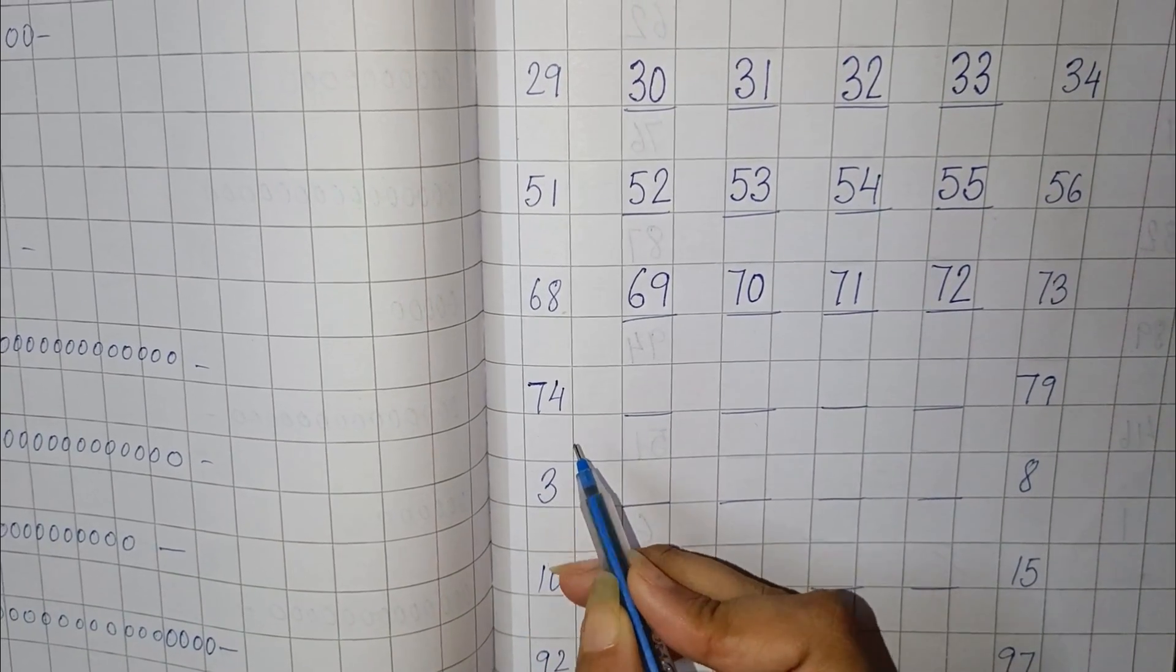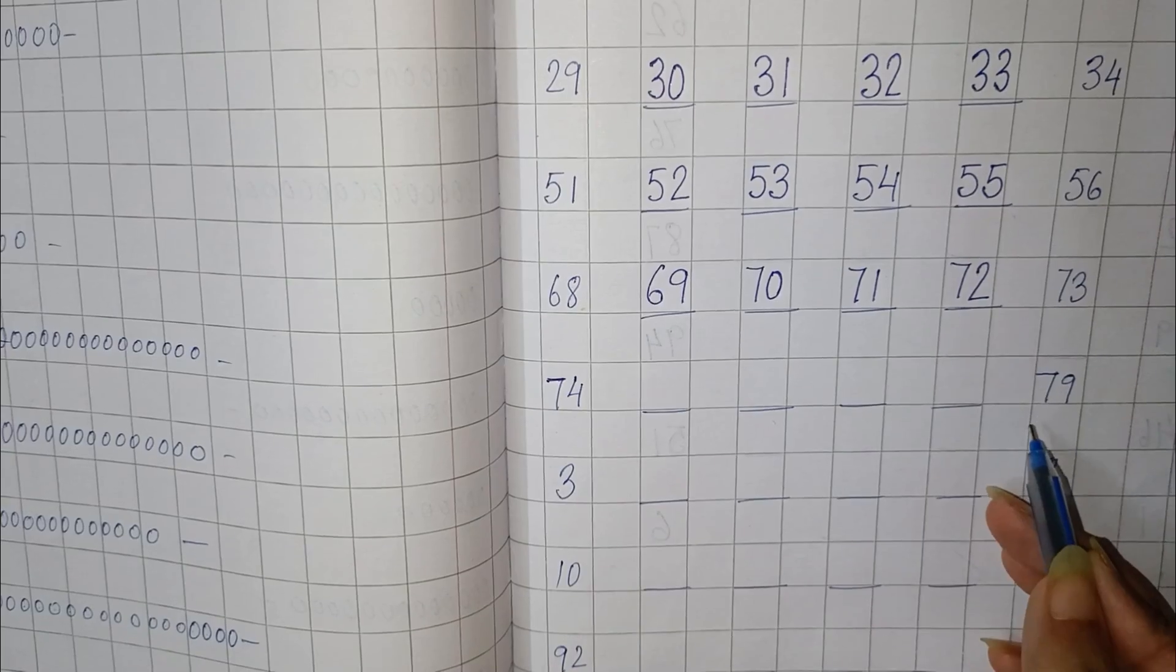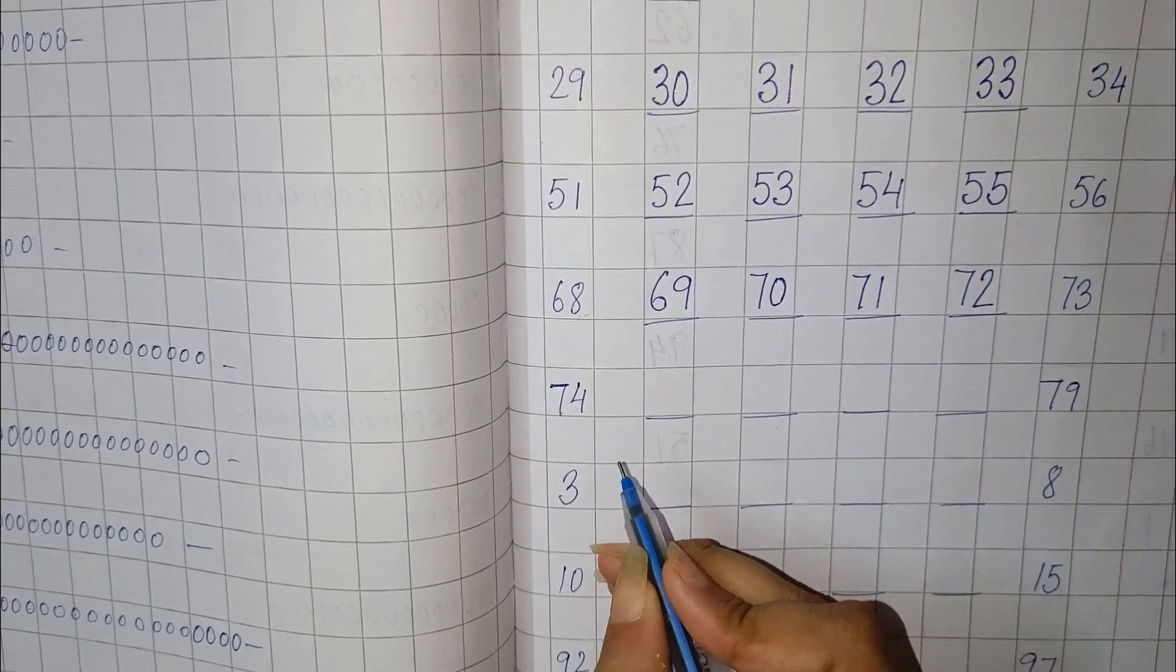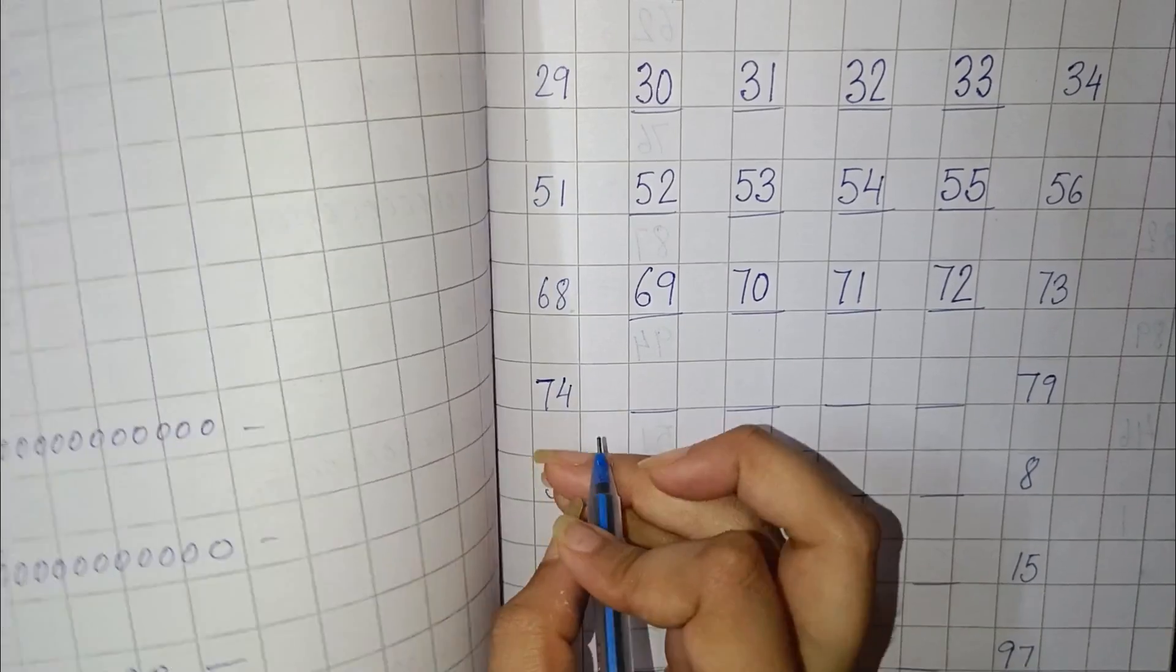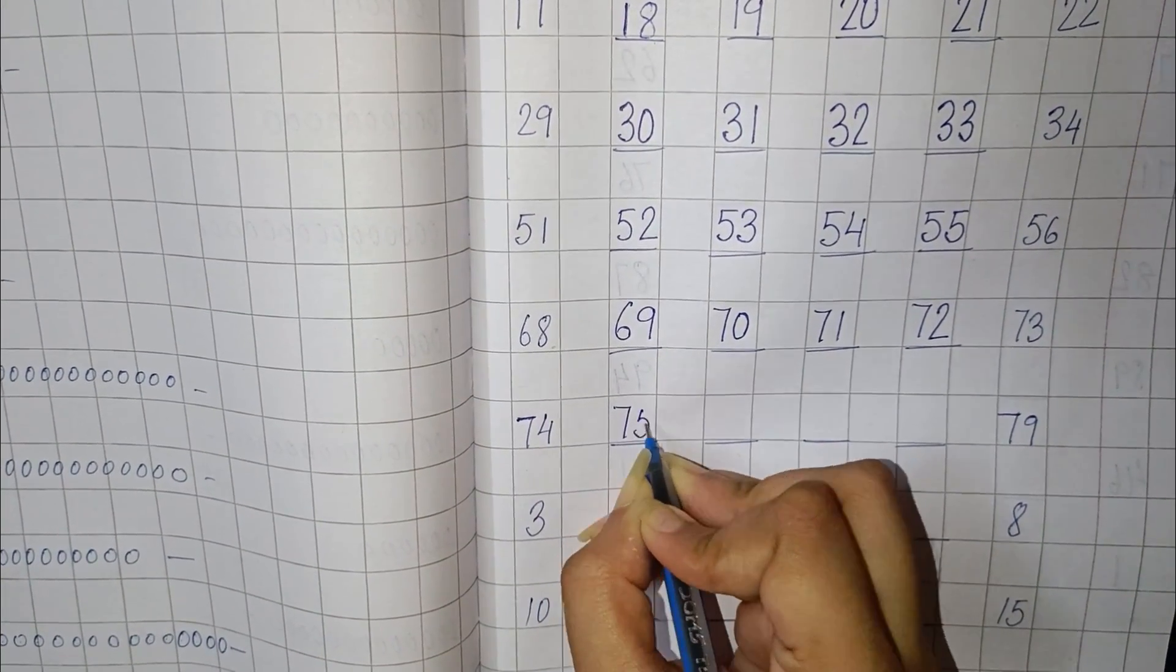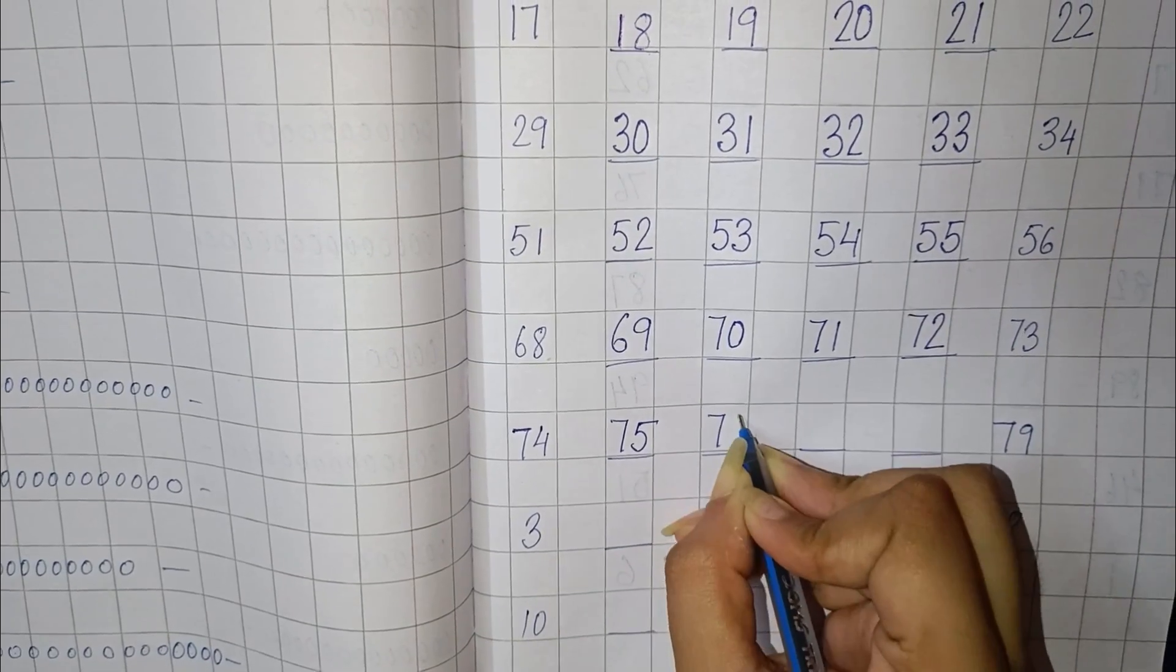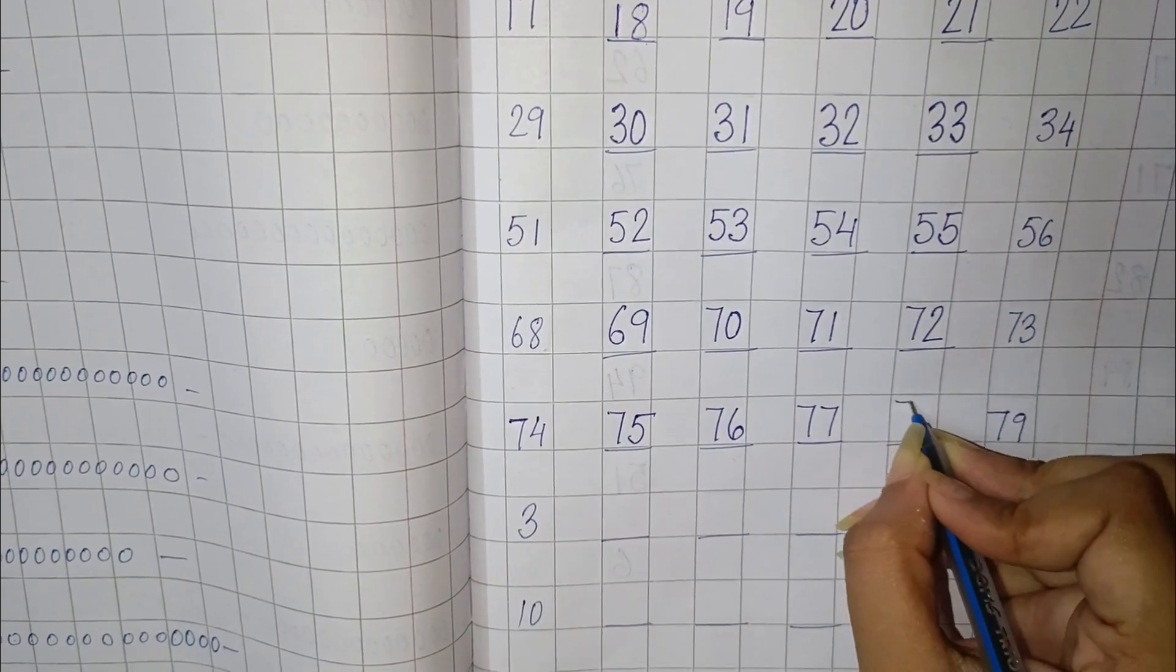Now next is 74 and 79. Now we will find numbers between 74 and 79. So here it will be 74, then 75, 76, 77, 78, and 79.